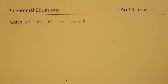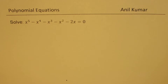I am Anil Kumar. Welcome to my series on polynomial equations. Here is an interesting equation to solve: x to the power of 5 minus x to the power of 4 minus x cube minus x square minus 2x equals to 0.